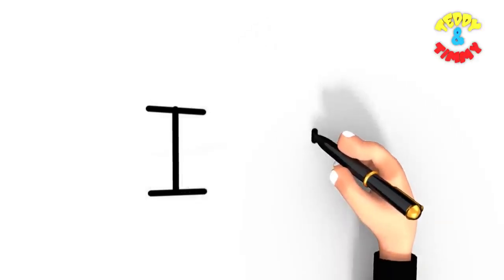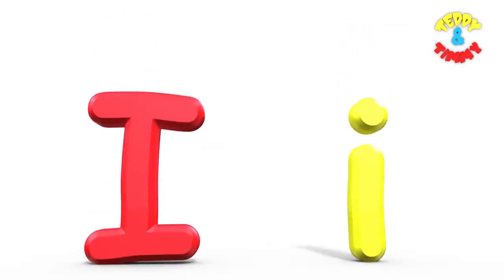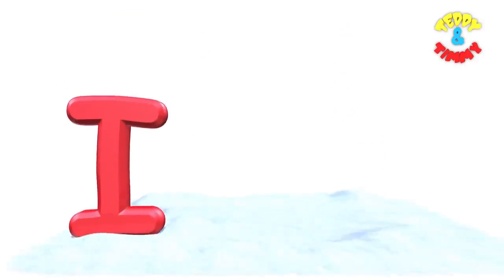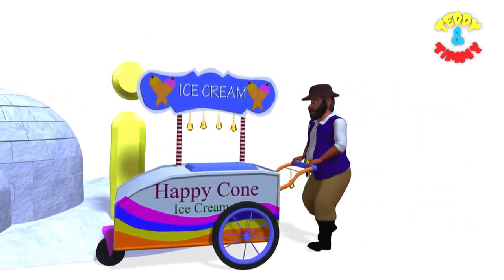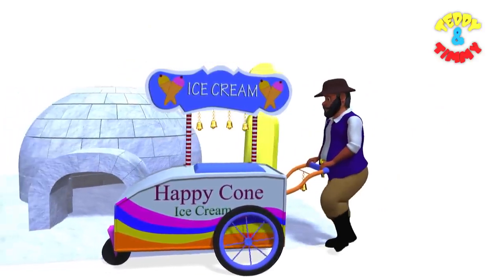Capital I, small letter I. I for igloo, I for ice cream cart.